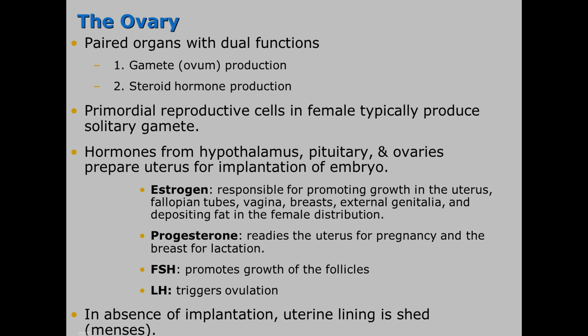Several hormones are involved in this process. Estrogen promotes growth in the uterus, fallopian tubes, vagina, breasts, and external genitalia, and deposits fat in the female distribution. Progesterone readies the uterus for pregnancy and the breast for lactation. FSH promotes growth of the follicles and LH triggers ovulation. In the absence of implantation, the uterine lining is shed, which is known as menses.